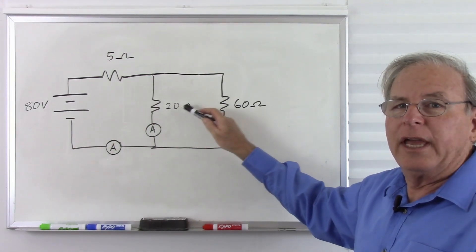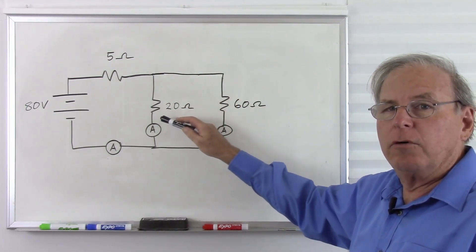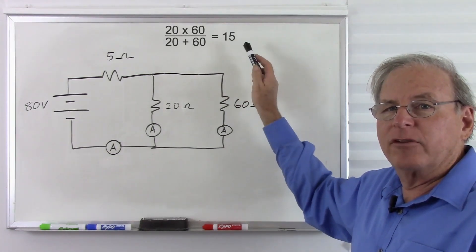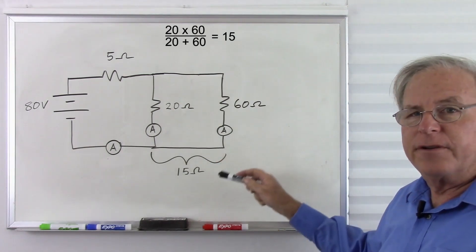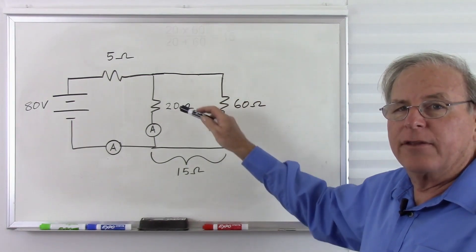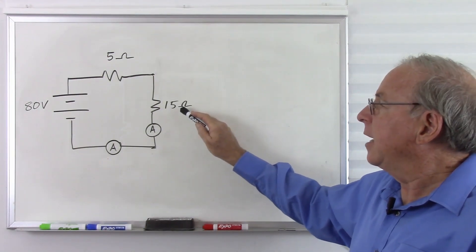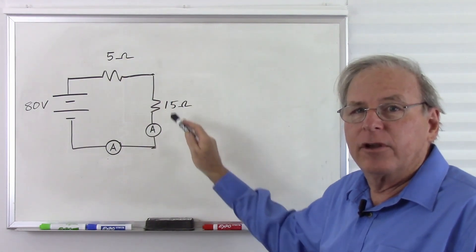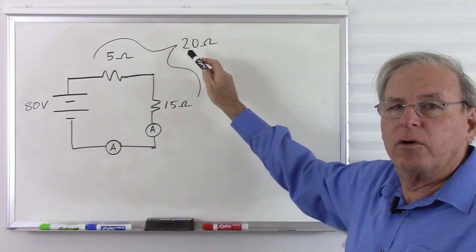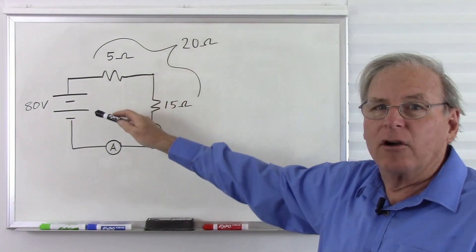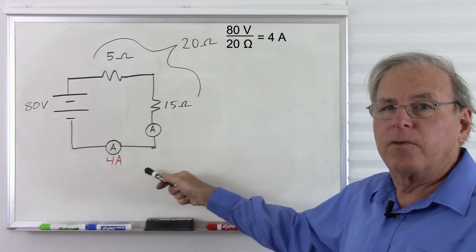Now we have 20 ohms in parallel with 60 ohms. Using the product-over-sum formula: 20 times 60 divided by 20 plus 80 equals 15 ohms for those two resistors together. Then 15 ohms in series with 5 ohms gives a total resistance of 20 ohms for the whole circuit. With 20 ohms and 80 volts, we get 4 amps of total current.